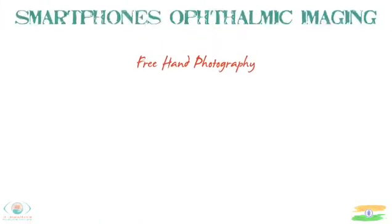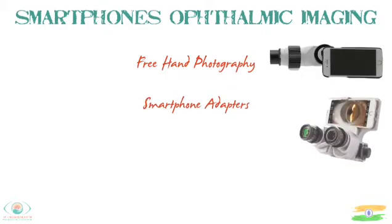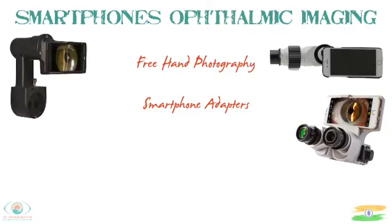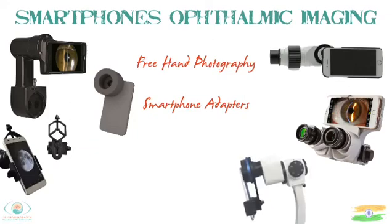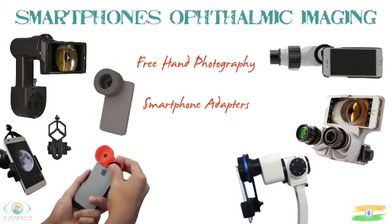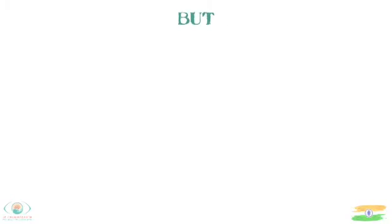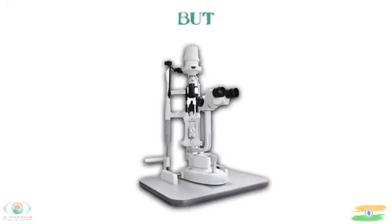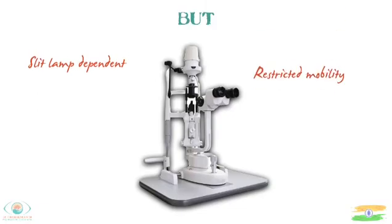Smartphone anterior segment photography is done by freehand photography or smartphone adapters. Various forms of smartphone adapters are present in the market — some made by 3D printing or universal adapters available online like Amazon and Flipkart. Although smartphones are handy, they require a slit lamp, which cannot be used in all locations as it is bulky and expensive, and fixing an adapter needs a minimum level of skill.